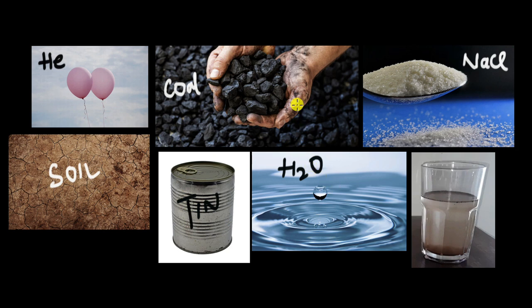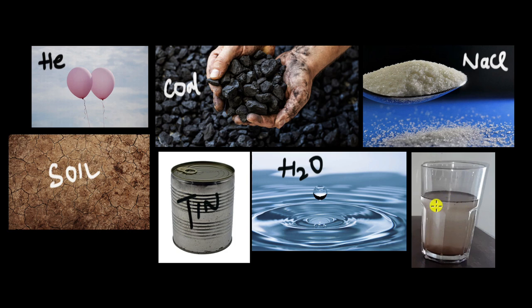Now going back to our original list: helium is a pure substance; coal is a mixture of many hydrocarbons; sodium chloride is a compound and a pure substance; soil is a mixture of many different compounds and elements; pure tin is a metal and a pure substance; water is a pure substance and a compound. Sand mixed with water is a mixture — it has a variable composition, and you can separate it by filtration or sedimentation, which are physical means of separation.